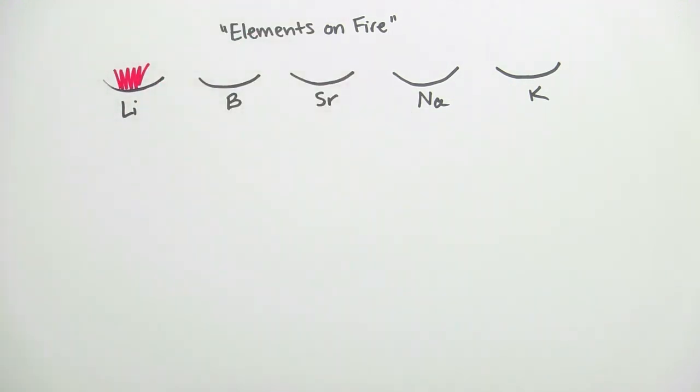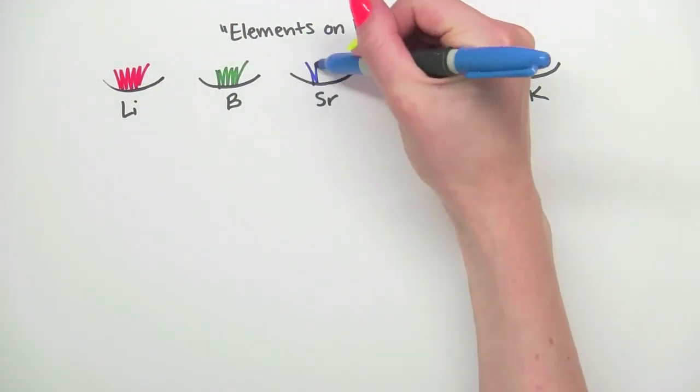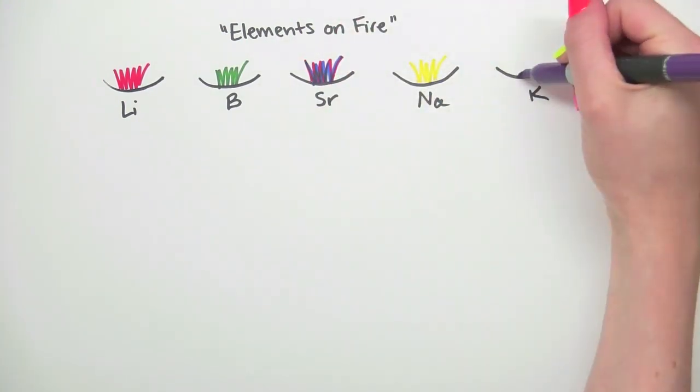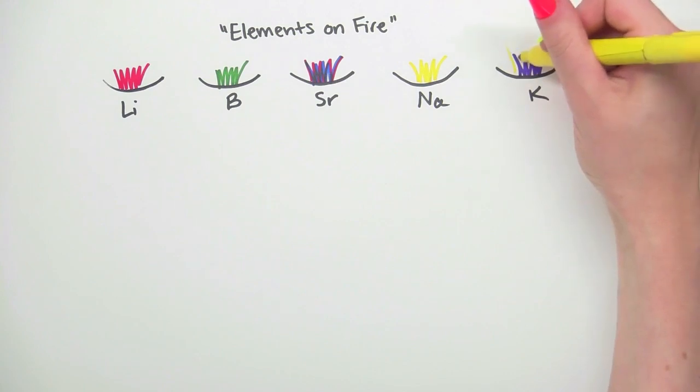Lithium is red, boron is green, strontium is a blue red, sodium is yellow, and potassium is violet with yellow streaks.